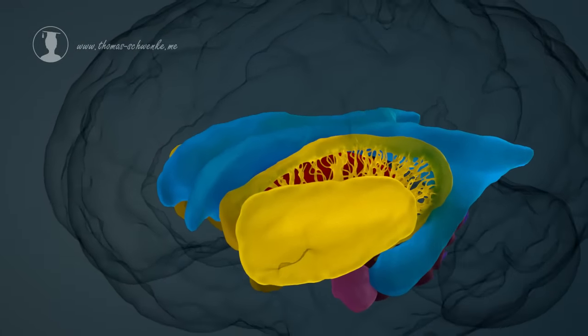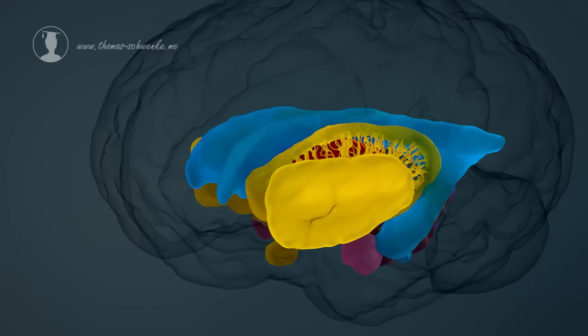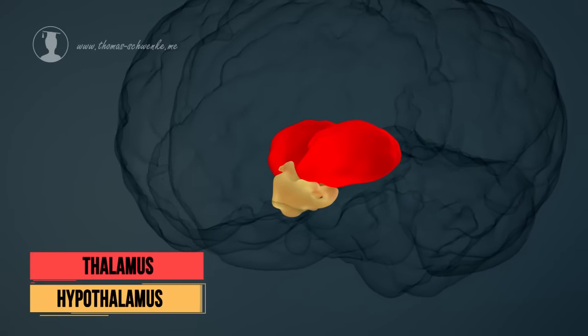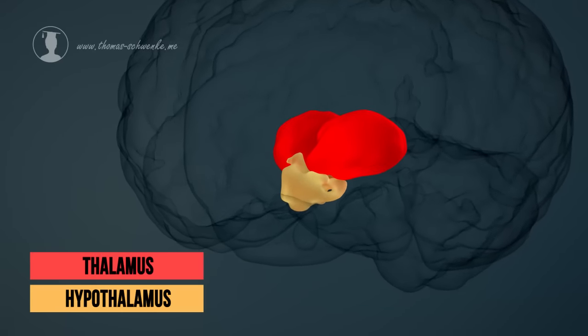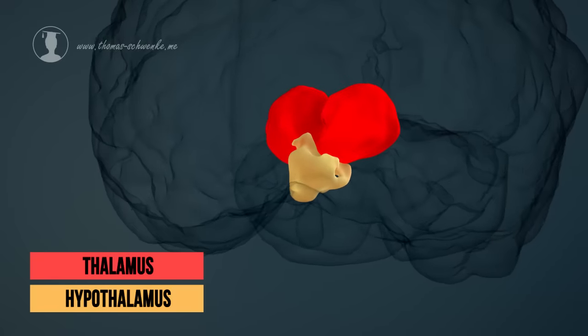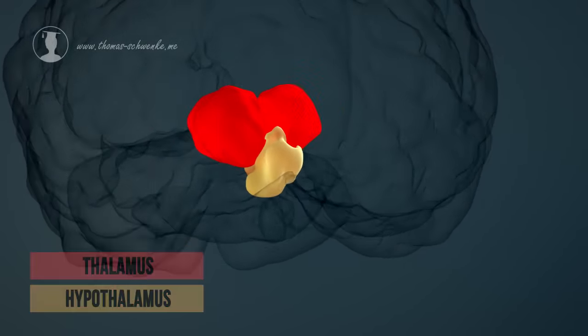Let's take a look at some other areas of the brain that are responsible for very specific tasks. One very important area is the hypothalamus, which is probably the most important control center of the autonomic nervous system. The correct setting of temperature and blood pressure is the task of this brain region.